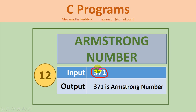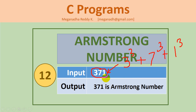Let's take 371 as an example input number. We need to check 3 cubed plus 7 cubed plus 1 cubed. So 3 cubed is 27, 1 cubed is 1, and for 7 cubed we need to find 7 squared which is 49, and then 49 times 7.